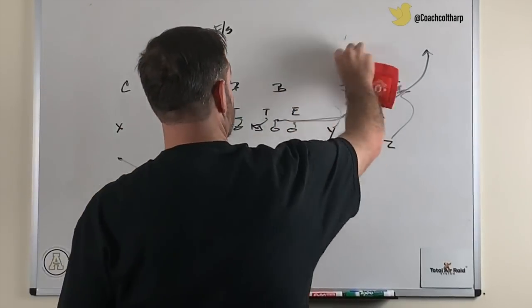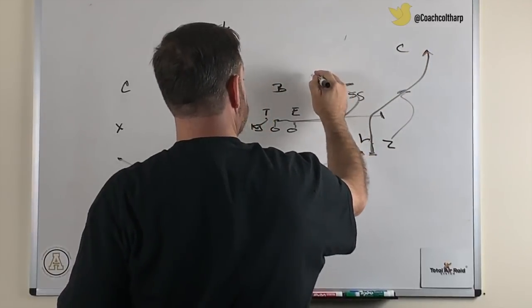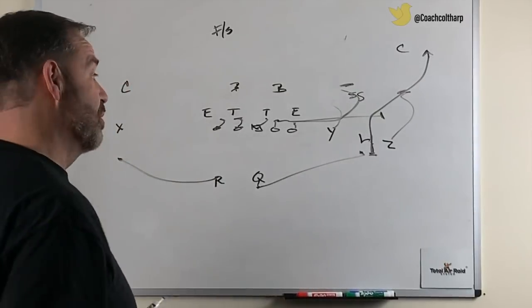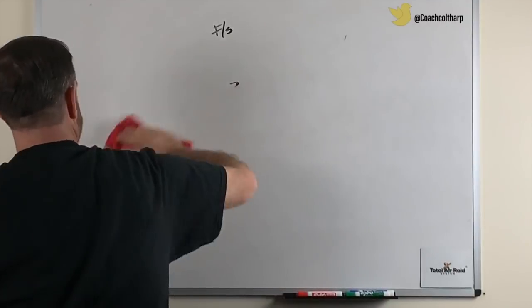Now if they do this number where they want to kind of roll down and back up type deal and play more of a 3D, then we'll just throw it to number one on that. So that's the first way I like to do it, kind of throw the fast screen in three by one.